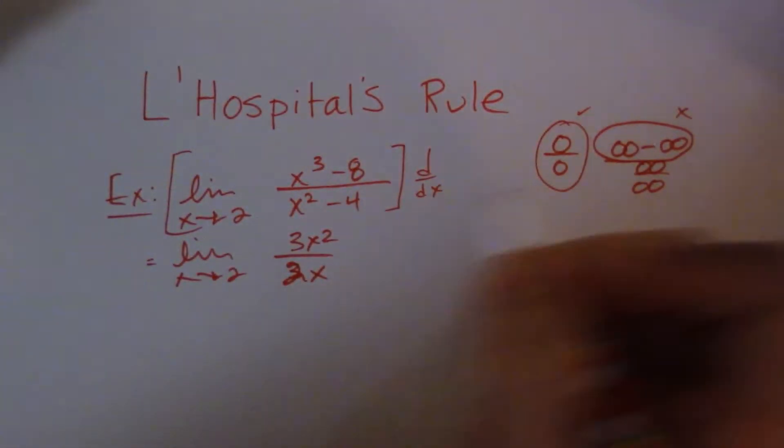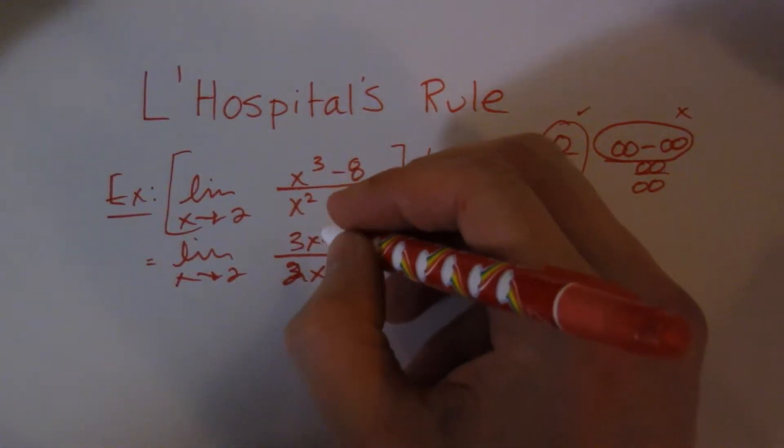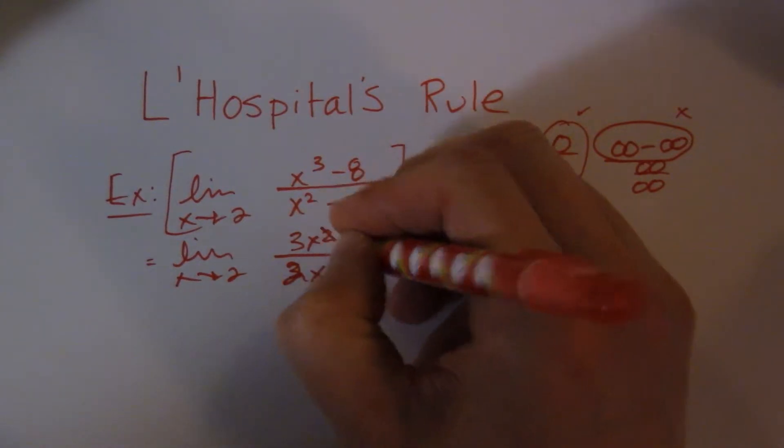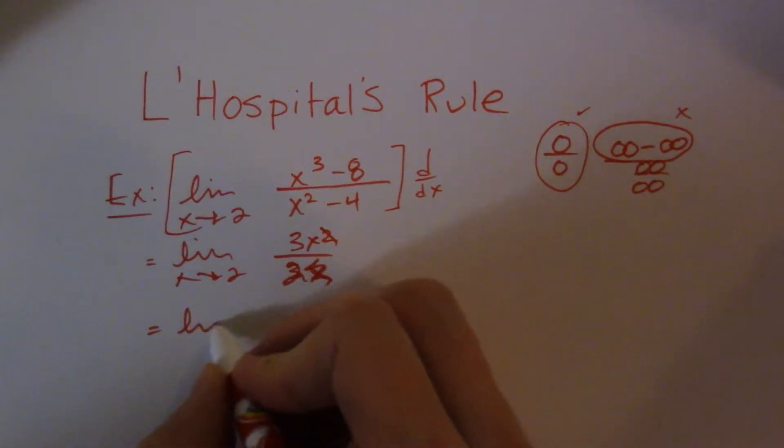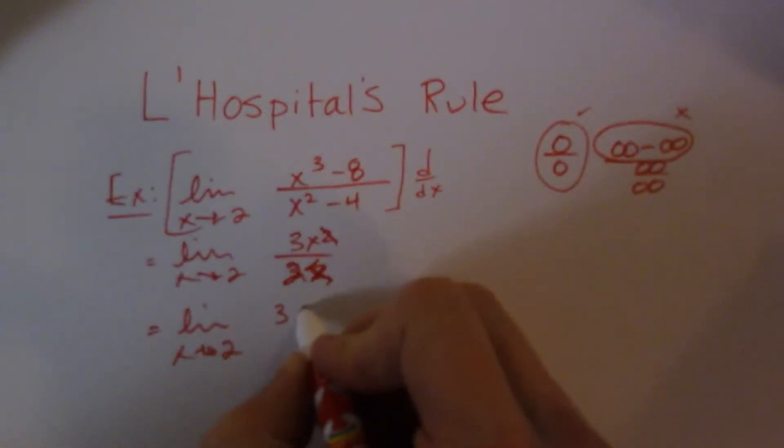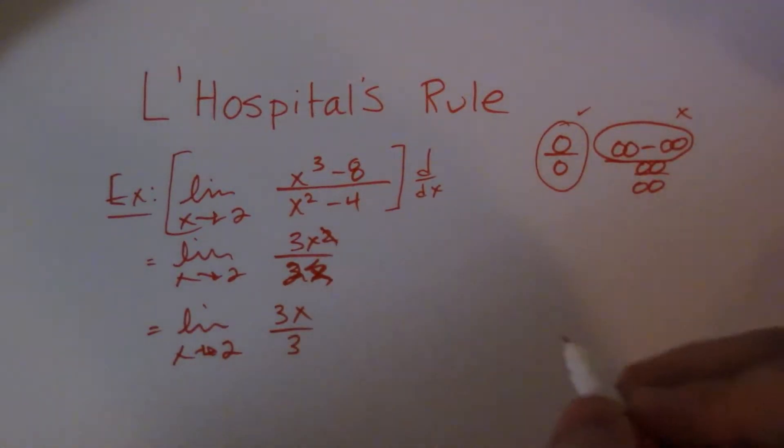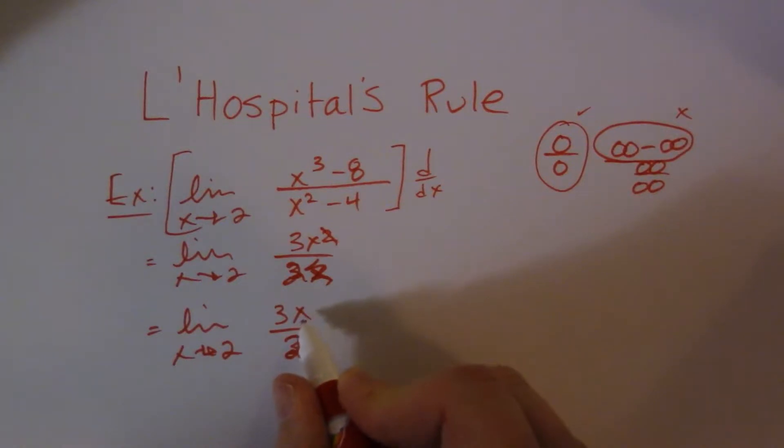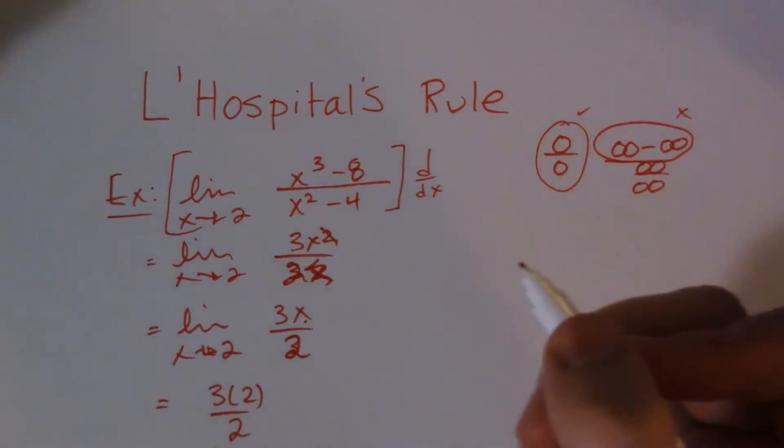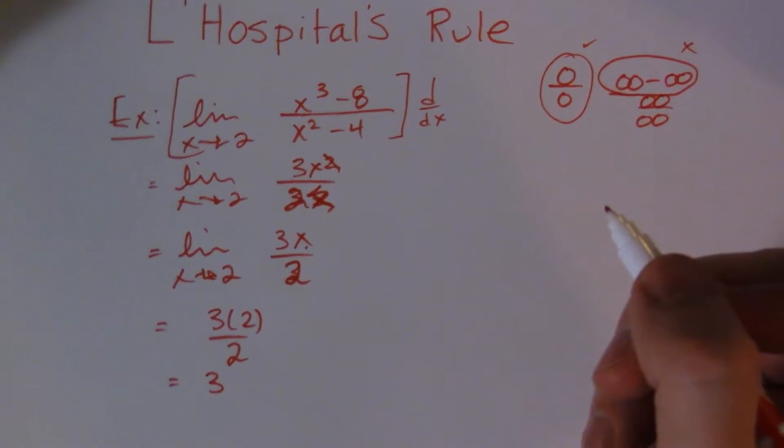Now, if you want to, you can cancel out the x's, you don't necessarily have to do this. Cancel that x, cancel that x. So I'm left with the limit as x goes to 2, let me slow down here a bit, I'm getting messy, 3x over 2. Now all you need to do is sub that 2 in right there, so 3 times 2 all divided by 2, and that actually is just 3. And there's my limit. So really, really that simple.